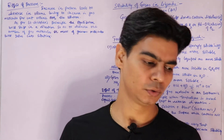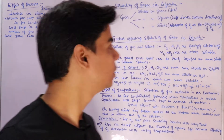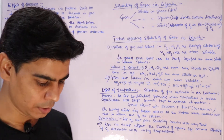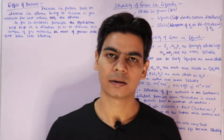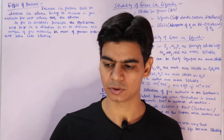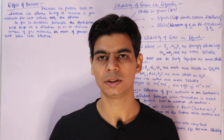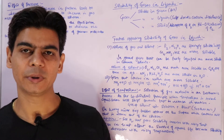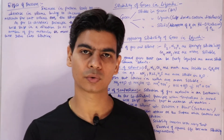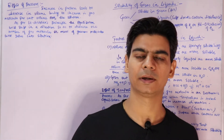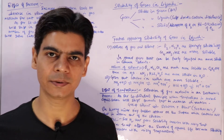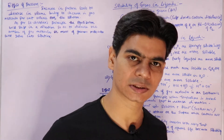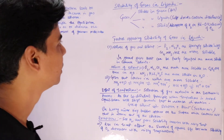Hi students, now we will go through solubility of gases in liquids. We know that gases are miscible among themselves. The common example is air, where we have oxygen, nitrogen, and other rare inert gases — all mixed up in air.